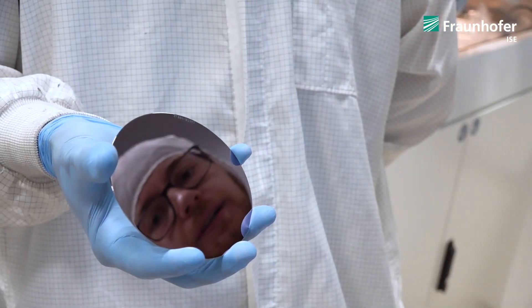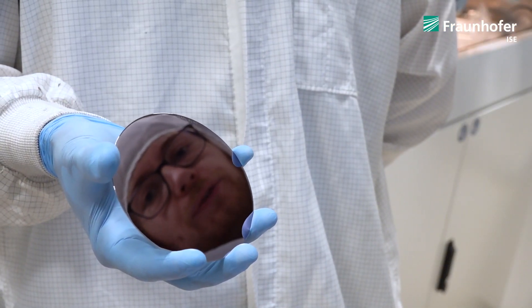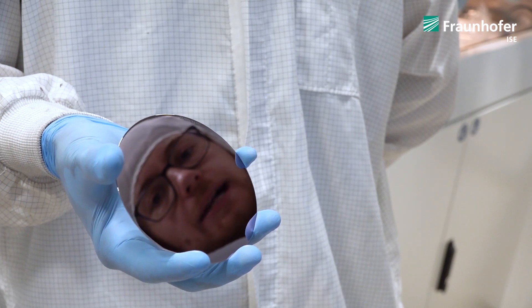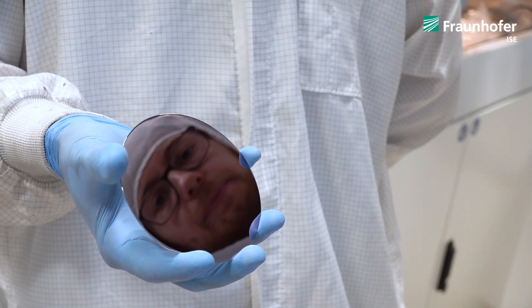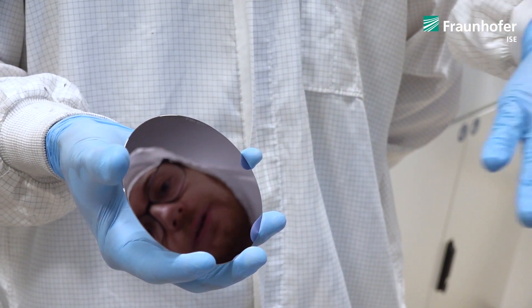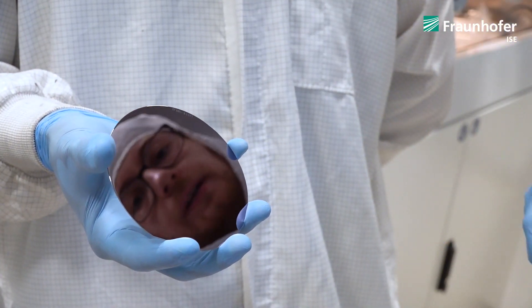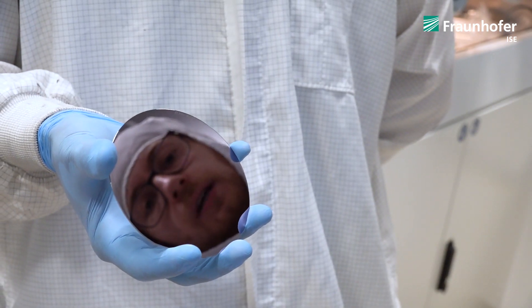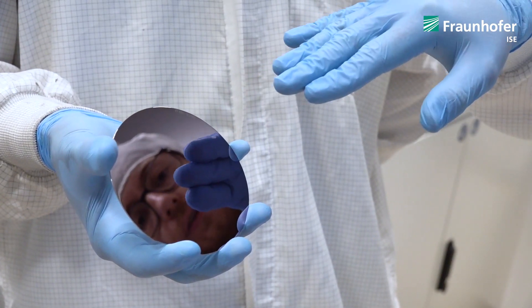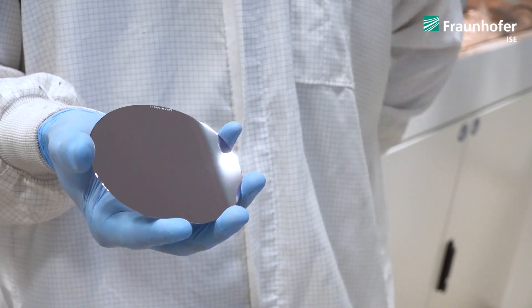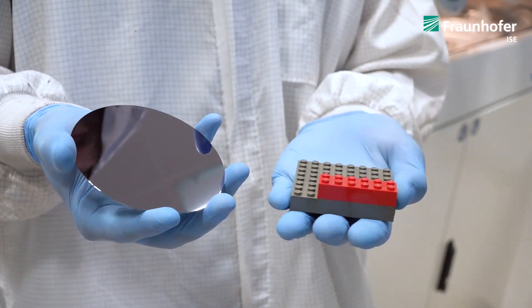This is a typical shiny wafer made from gallium arsenide that we use for the epitaxial growth. And inside the reactor the gas flows on the surface of this wafer and the atoms are deposited on the surface. And how this works exactly we will now explain in the model.